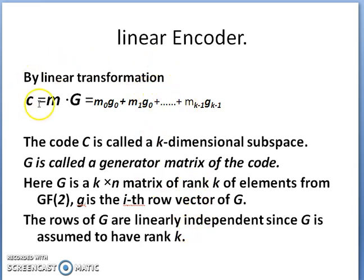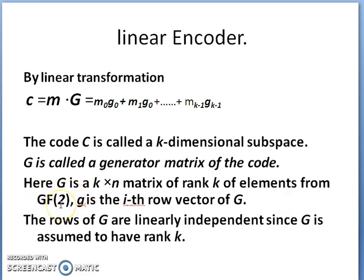To generate codewords using a linear encoder, there is a linear transformation c = m × G, where c is the codeword, m is the message, and G is the generator matrix. G is a k-by-n matrix of rank k with elements from GF(2), the Galois field of 2. The rows of G are linearly independent since G is assumed to have rank k.